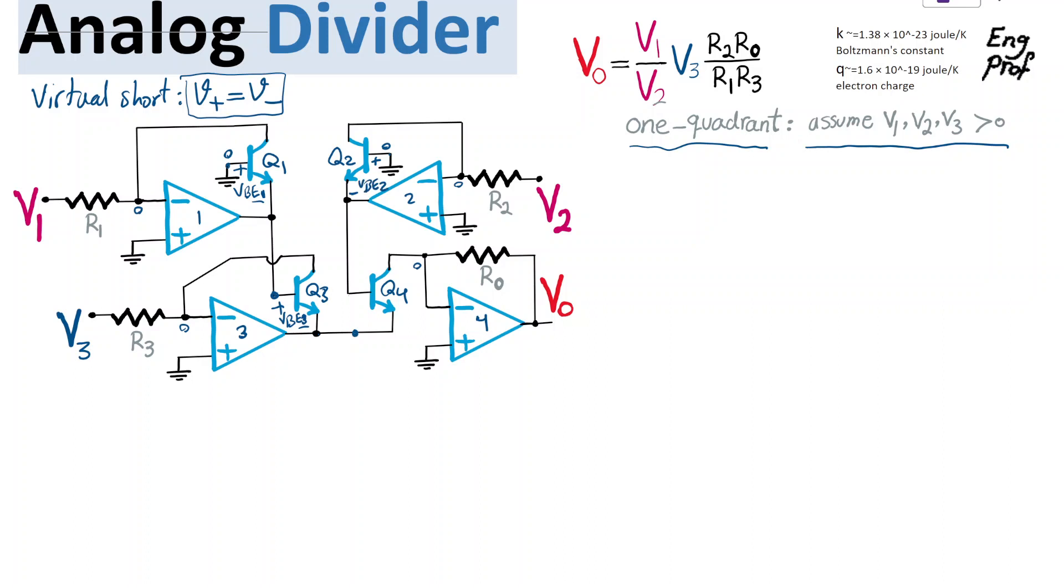And then we get to the base of transistor Q4, which is at the emitter of Q2. So from there, another VBE, which is this time VBE4, we get to the common emitter at the bottom. So as a result, effectively,